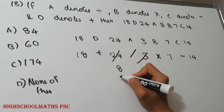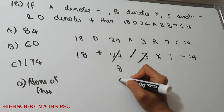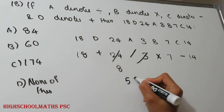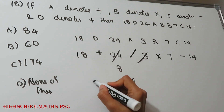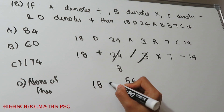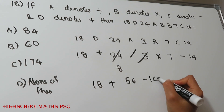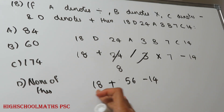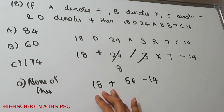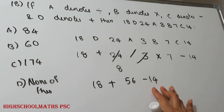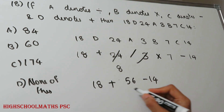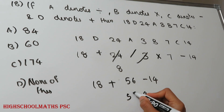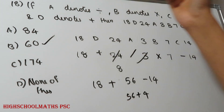8 into 3 is 24. Evaluating: 18 plus 64 minus 14. Using BODMAS: 18 plus 64 gives 82, minus 14 equals 68. Then 18 plus 4 is the simplified answer.